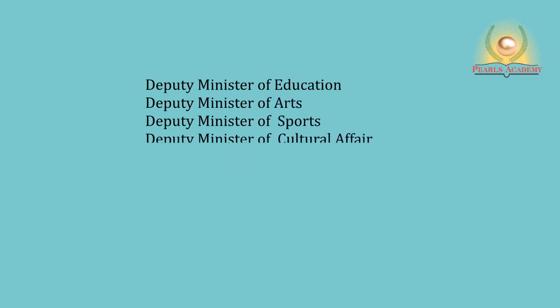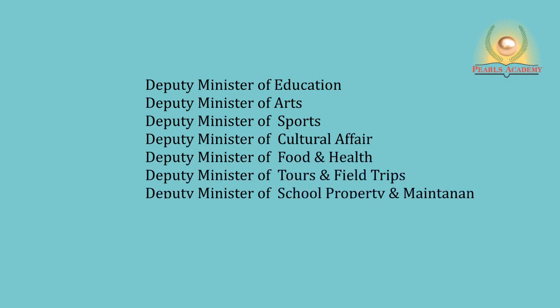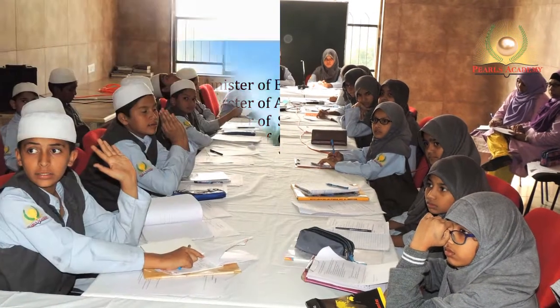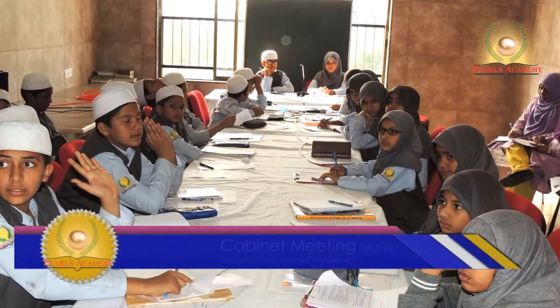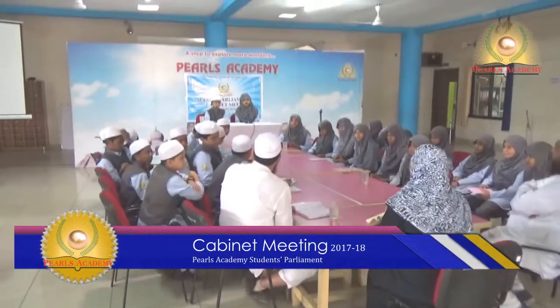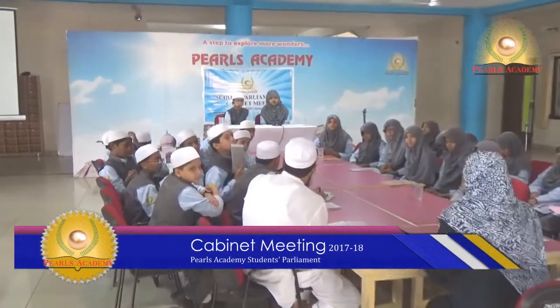There were nine deputy ministers: Deputy Minister of Education, Arts, Sports, Cultural Affairs, Food and Health, Tours and Field Trips, School Property and Maintenance, Transport, and Cleanliness. A post of MC was also introduced along with an Eco Club Board which included one secretary and two members. Cabinet meetings were scheduled on a regular basis and attendance was mandatory.